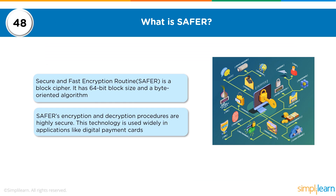What is SAFER? SAFER stands for Secure and Fast Encryption Routine, which is also a block cipher. It has a 64-bit block size and is a byte-oriented algorithm. SAFER's encryption and decryption procedures are highly secure, and this technology is widely used in applications like digital payment cards. When using an online payment gateway — filling in credit card information, expiry dates, CVV, and OTP — all of this needs to be secured per PCI DSS (Payment Card Industry Data Security Standard). SAFER is one of the block ciphers used under the digital payment gateway infrastructure.